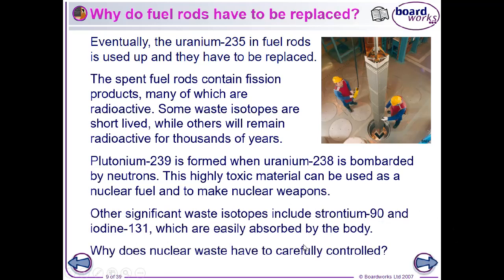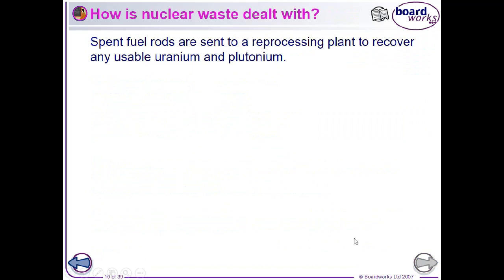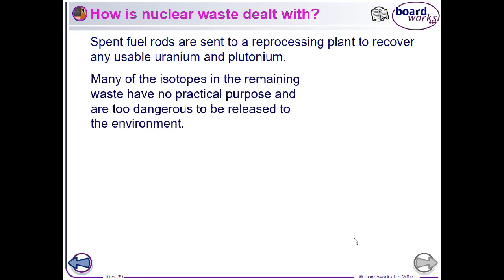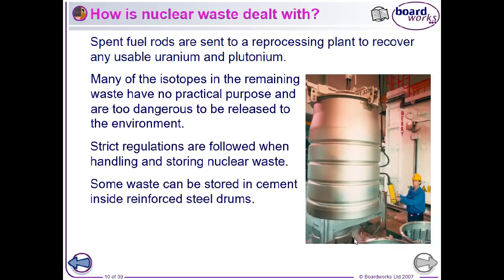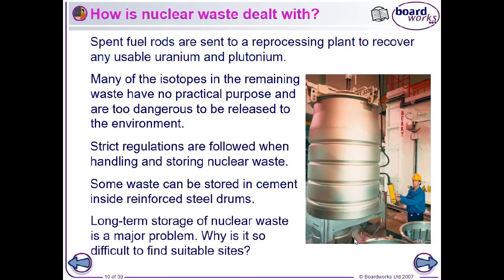So, the combination of isotopes that can be absorbed by the human body and the fact that they'll be radioactive for thousands of years means that the nuclear waste from these reactors has to be very carefully controlled and looked after. So, we send these spent fuel rods to a reprocessing plant to recover any uranium that we can use and plutonium. And then the other waste isotopes, we don't have any uses for them. We can't release them into the environment because they're too dangerous, too radioactive. So, we have to store them away in what we call cemeteries. In steel, reinforced steel drums and underground concrete cemeteries for thousands of years to come.